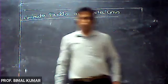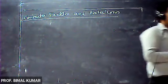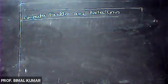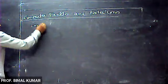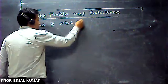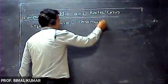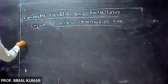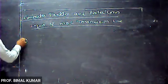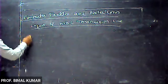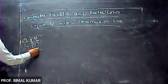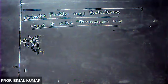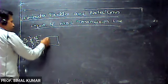Good afternoon students. Today we will discuss converter faults and protection. Looking at the basic layout of the HVDC transmission line, first there is the netting station, then a step-up transformer, followed by converter station one.